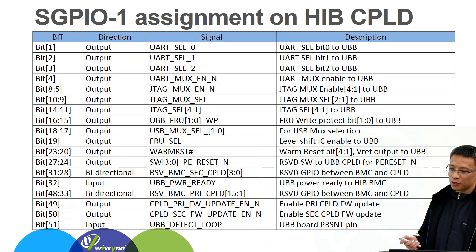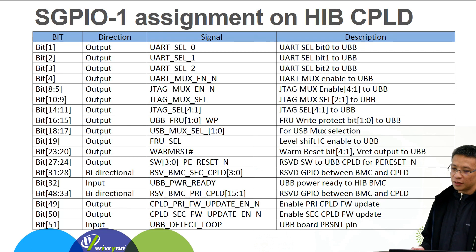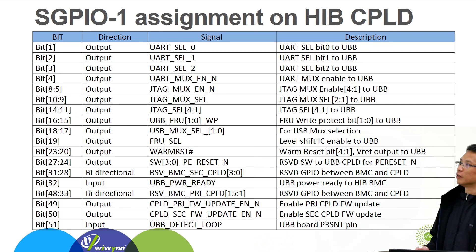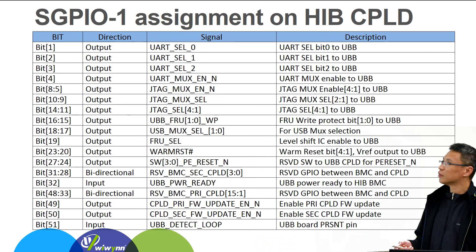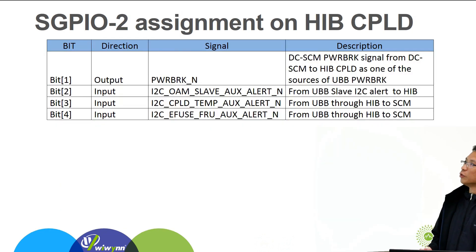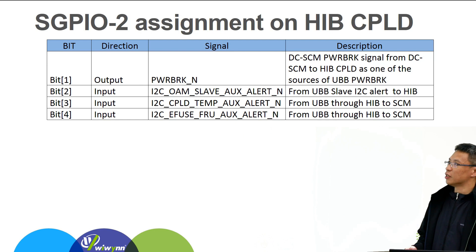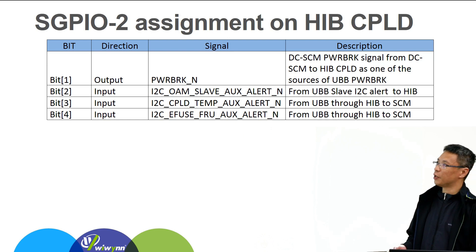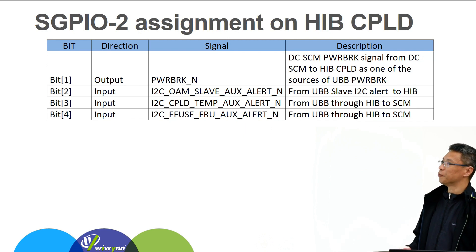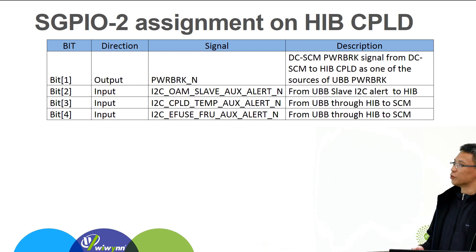For mapping GPIO signals, we use two SGPL interfaces. SGPL1 is used to map non-latency critical signals, such as select signal and enable signal. SGPL2 is used for low latency signals, such as power break and alert signals.